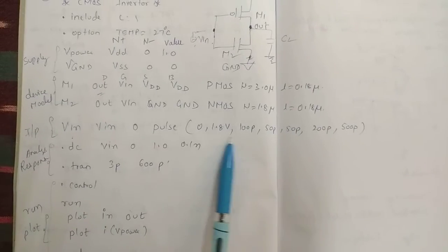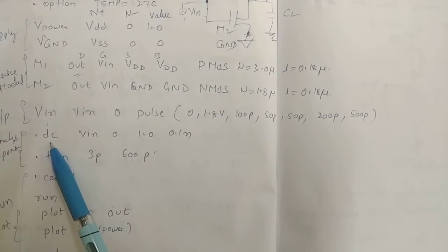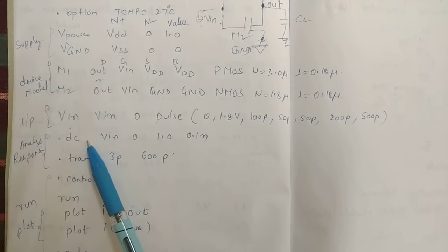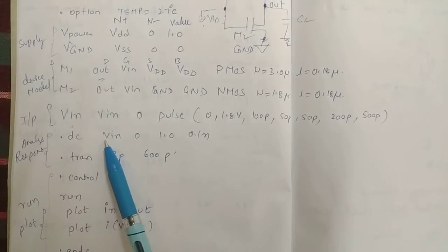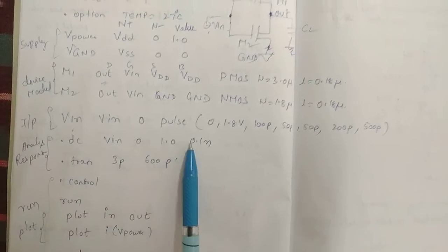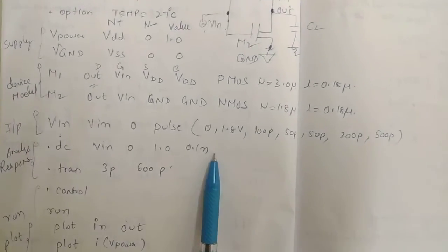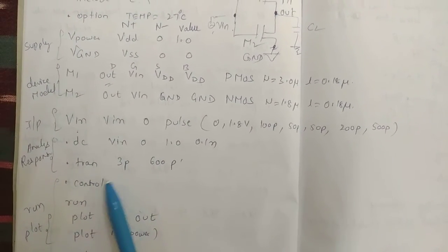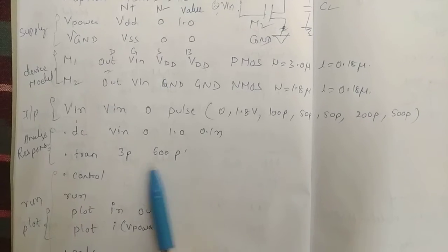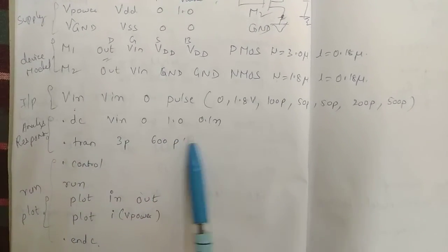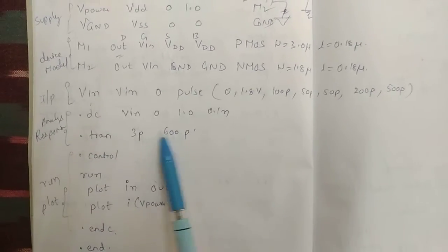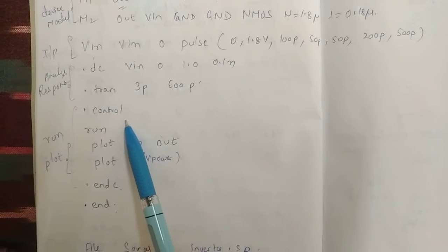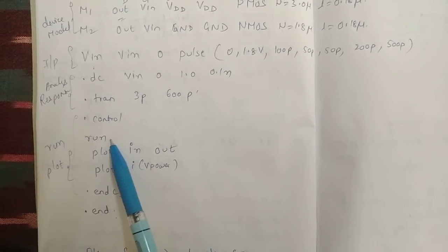This is the syntax. Then dot DC analyze: VIN 0 1.0 and step of 0.1. If you want to see transient, dot transient 3 pico to 600 pico, that means the range up to which you want to see the circuit. Then dot control to run, then run.